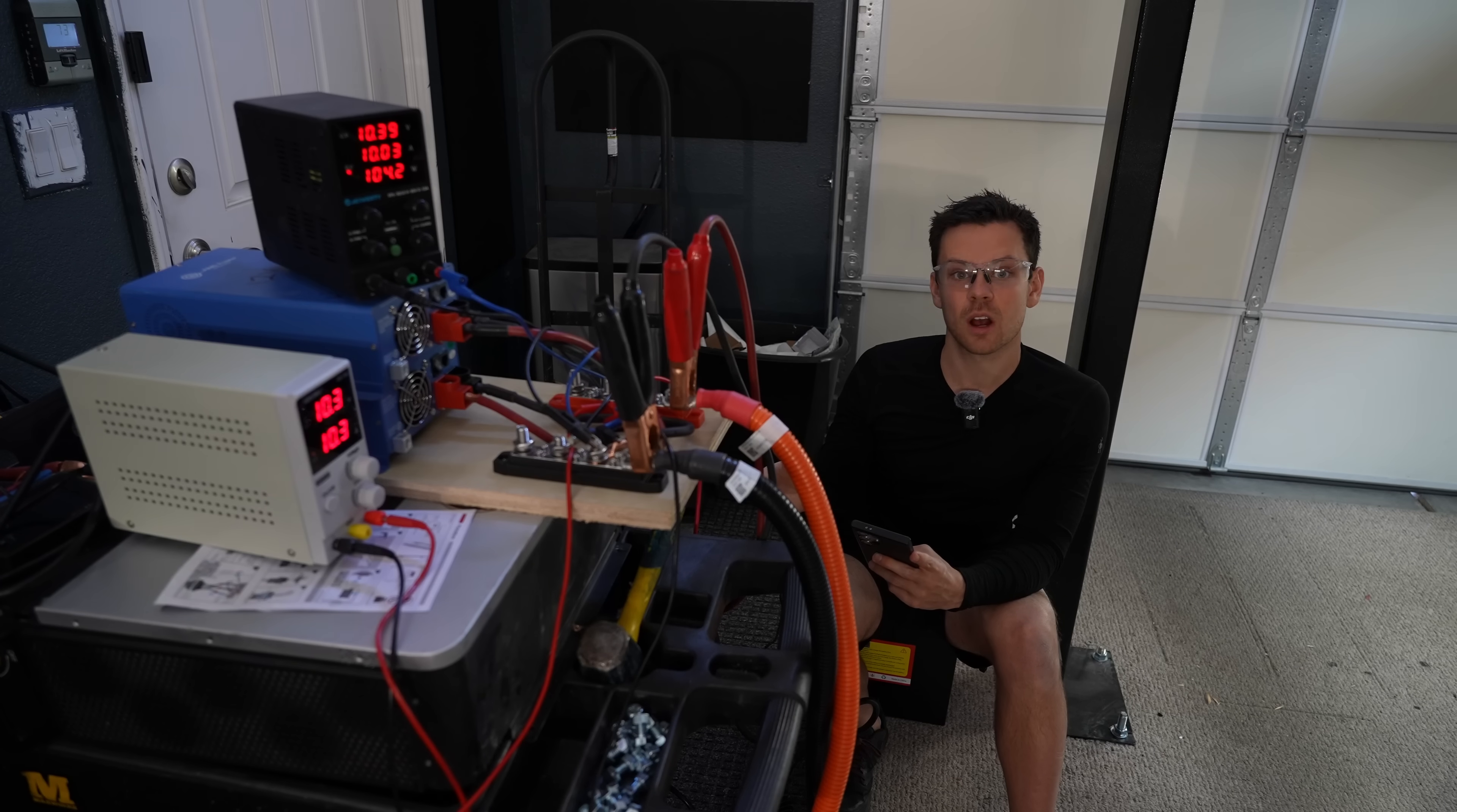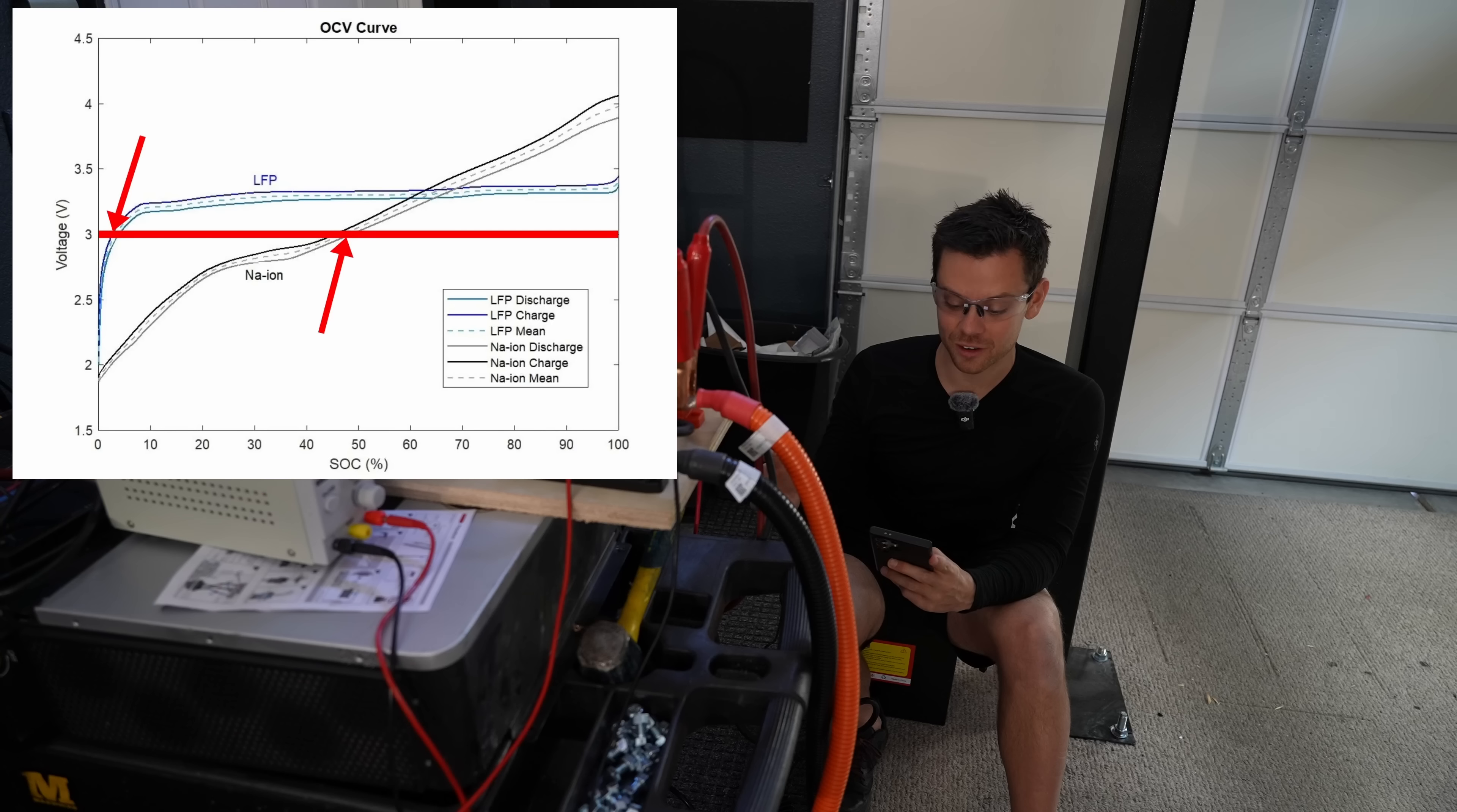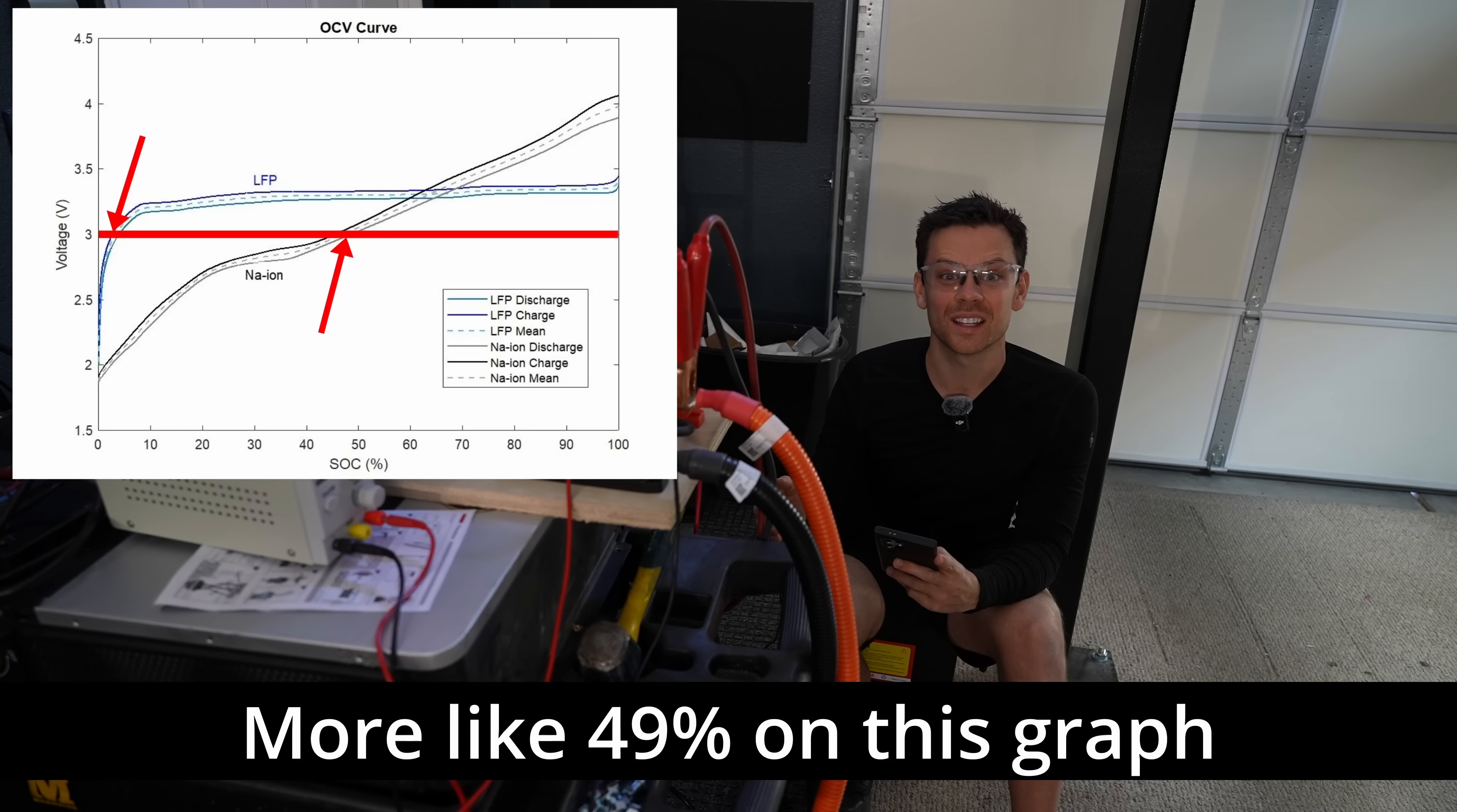What's crazy is LFP doesn't drop below three volts per cell until three percent state of charge, but for sodium ion it's 50 to 60 percent state of charge. So the voltage you get at three percent with LFP is what you get at 50 to 60 percent with sodium ion.